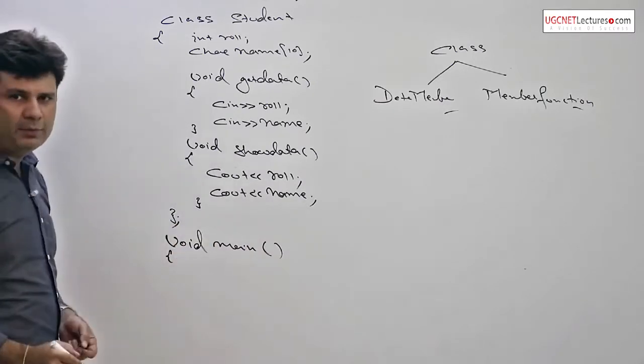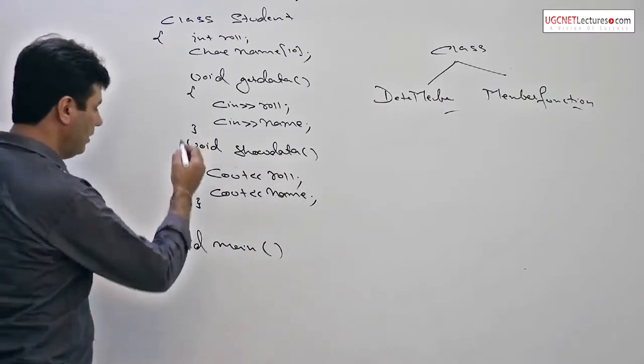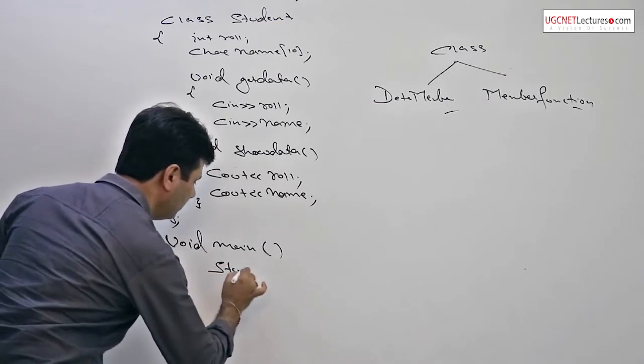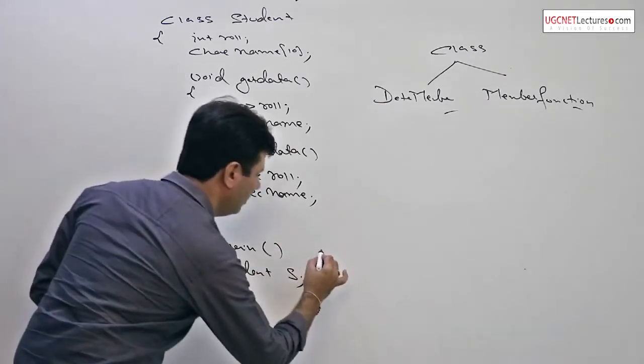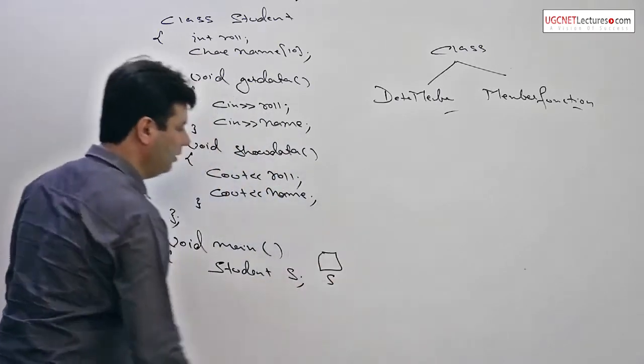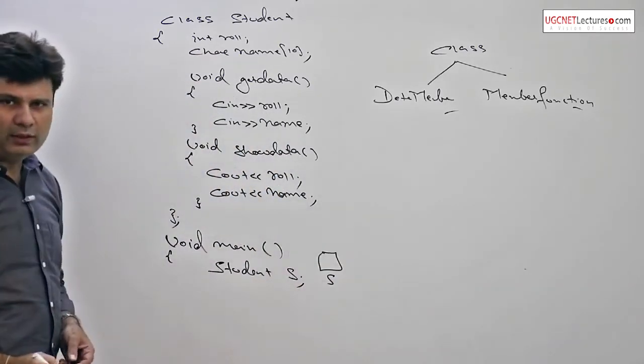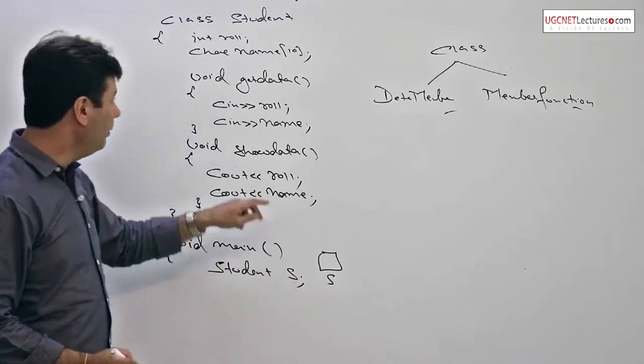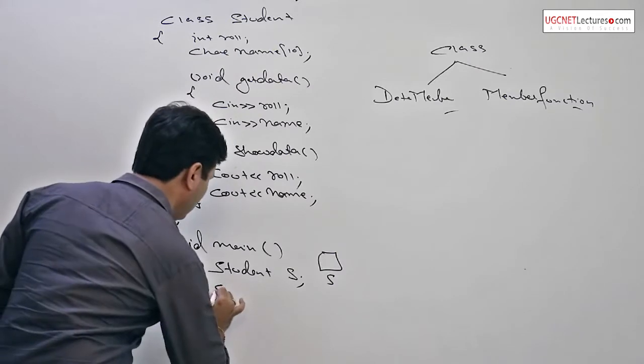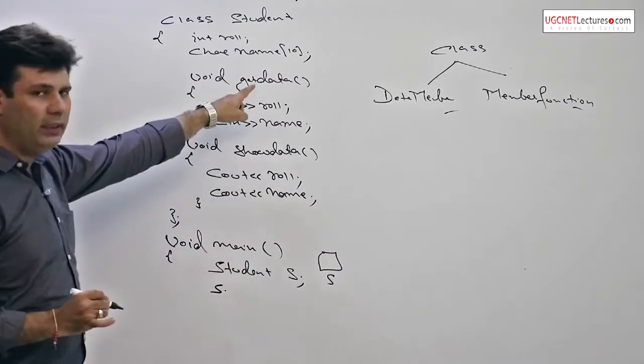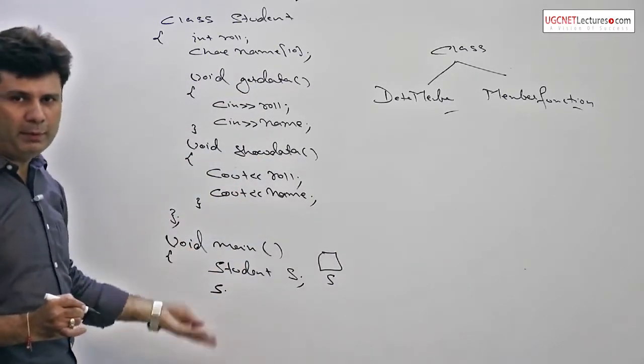First of all, I will make an object, the instance of the class student. And here, the moment you declare an object of class student, the object is fully responsible to allocate memory for its data members. Now I need to call a function so that the input or output things can be performed.